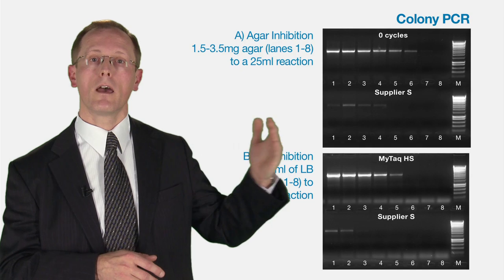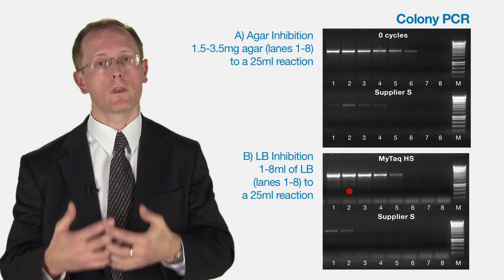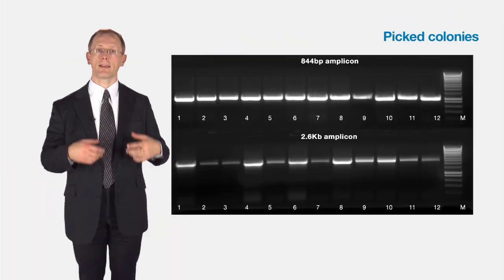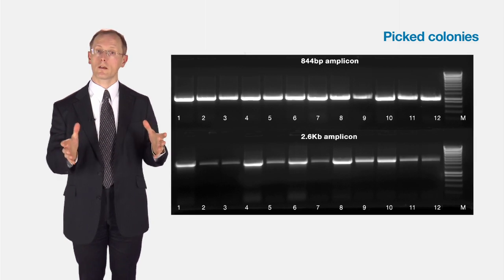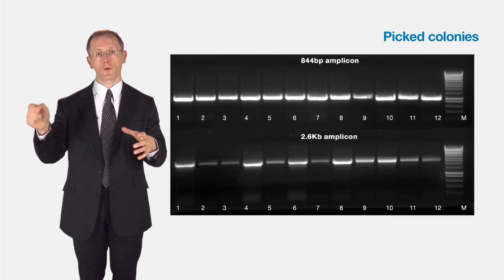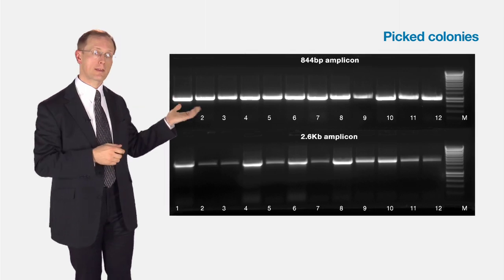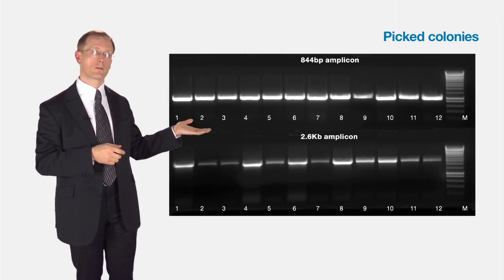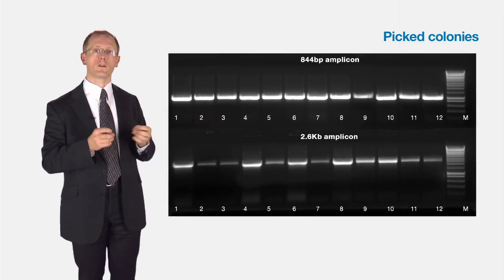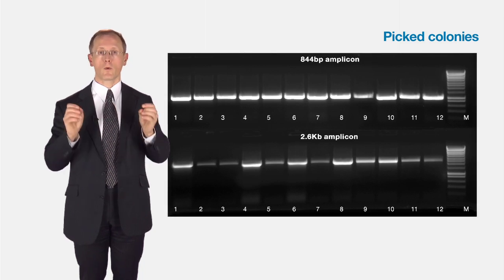But the inhibition with MyTaq is much less than with other polymerases. As a result, we can take a Petri dish, pick individual colonies, put them into a test tube with buffer, and do the PCR and get results. Not only can we get results with small fragments, but also with larger fragments. This means you can do screening with colony PCR very easily without optimization.